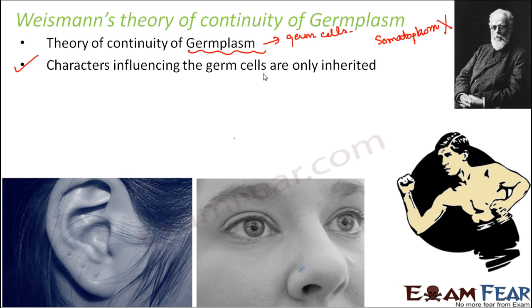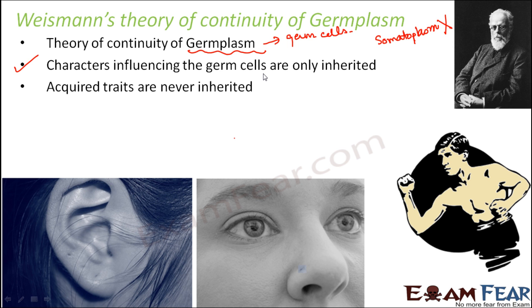This way, Weismann's theory conveyed that Lamarck's theory of evolution was not entirely correct — not all of its postulates were correct. Only after Weismann's theory was Lamarck's theory modified, and it then came up as neo-Lamarckism. The bottom line of Weismann's theory of continuity of germplasm is that acquired traits are never inherited.